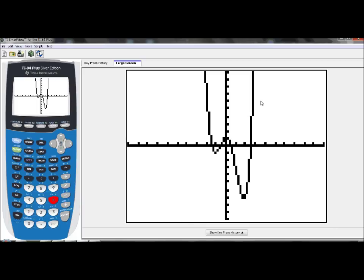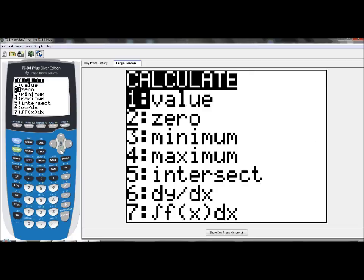Let's first find our zeros. If we take a look, remember, zeros are x-intercepts. There's 1, 2, 3, 4 zeros. So what we want to do is use our second trace, which is our calculate menu. We want to use our zero feature four times because there are four zeros.